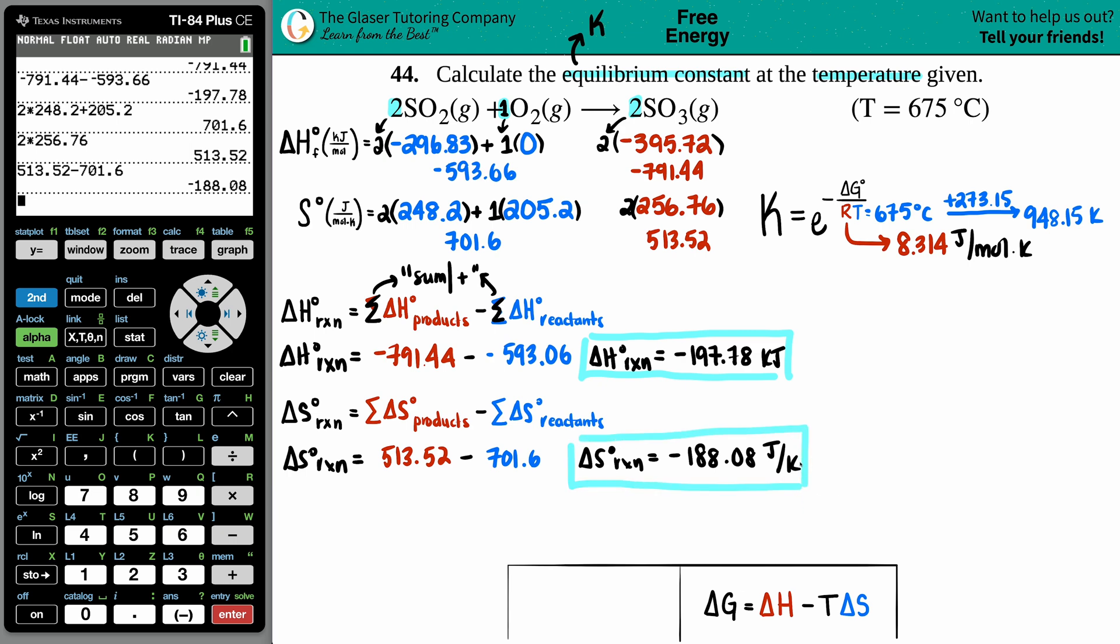Now we have the H, we have the S, and the temperature was 675 degrees celsius which is 948.5 degrees kelvin. Now let's solve for ΔG.